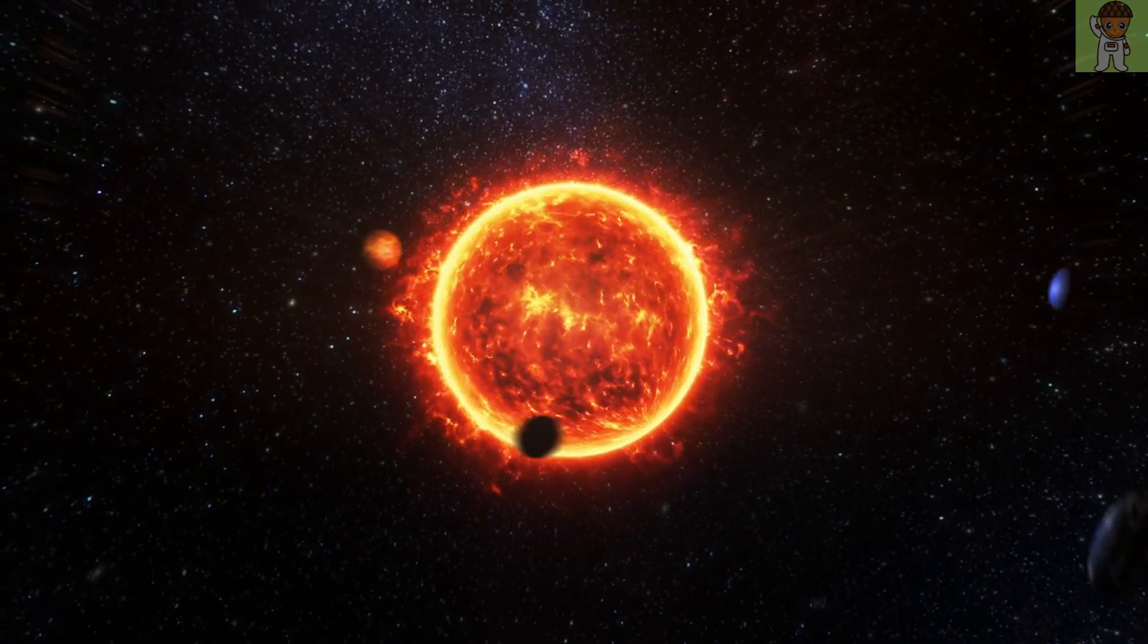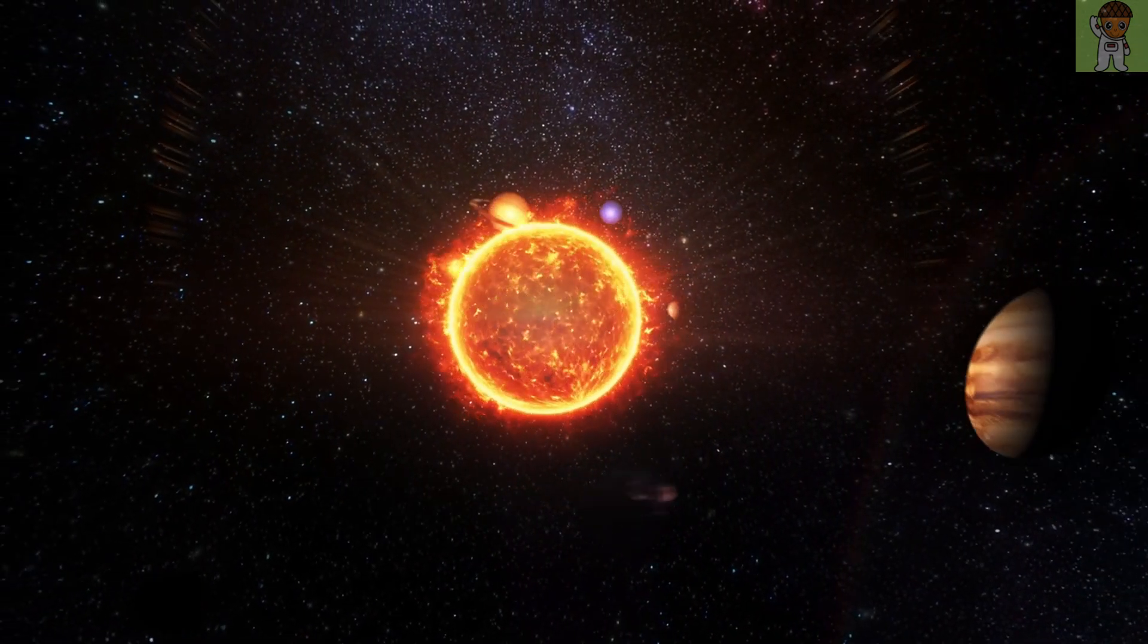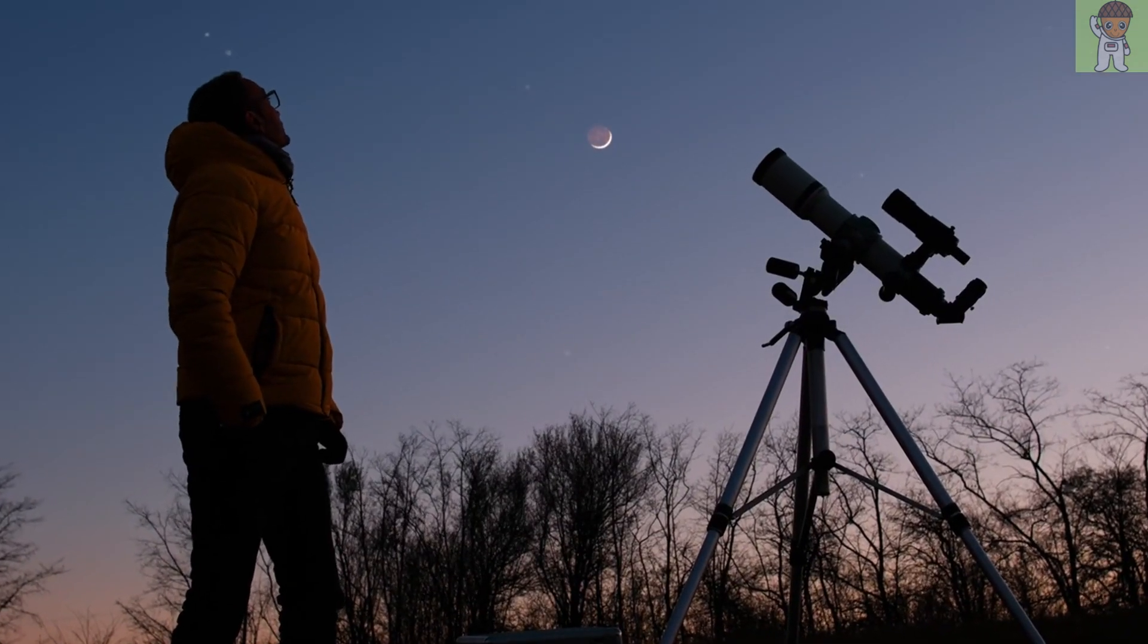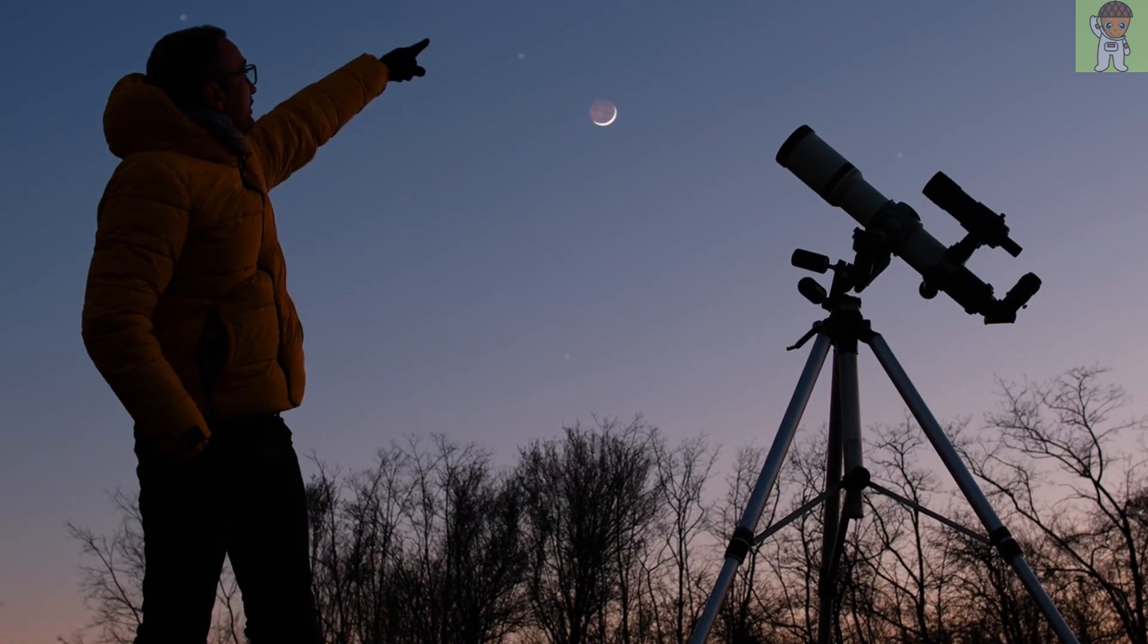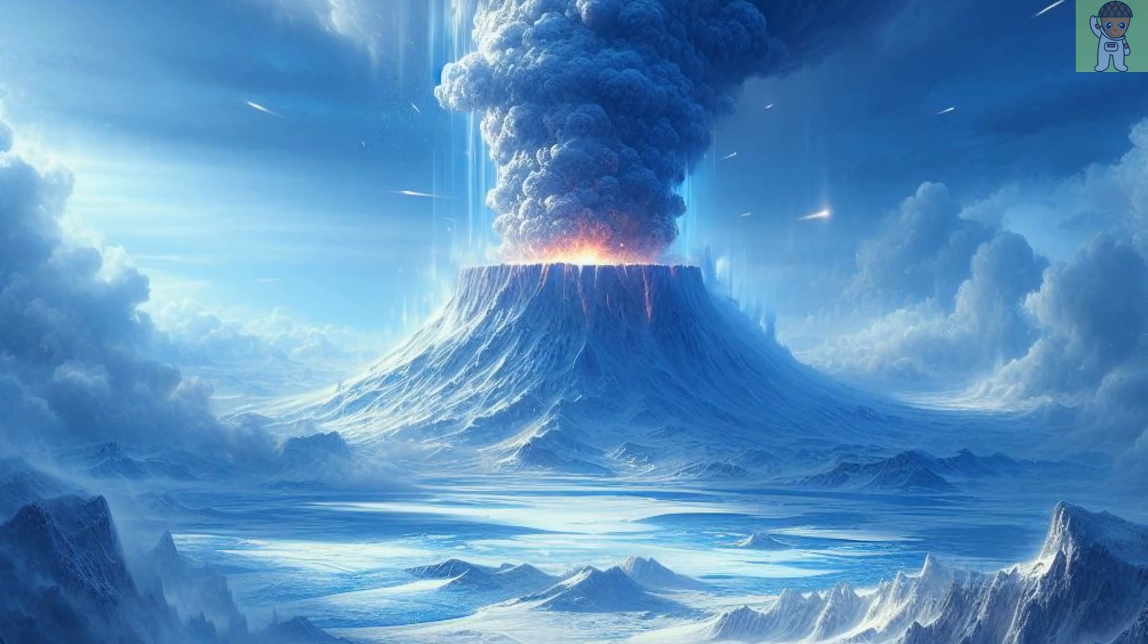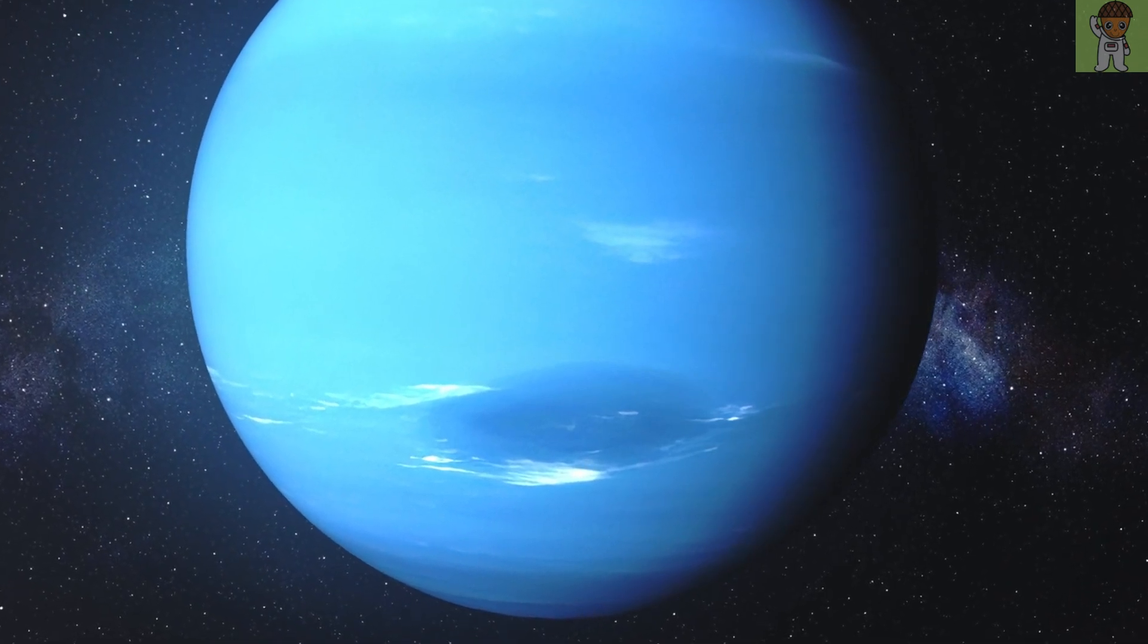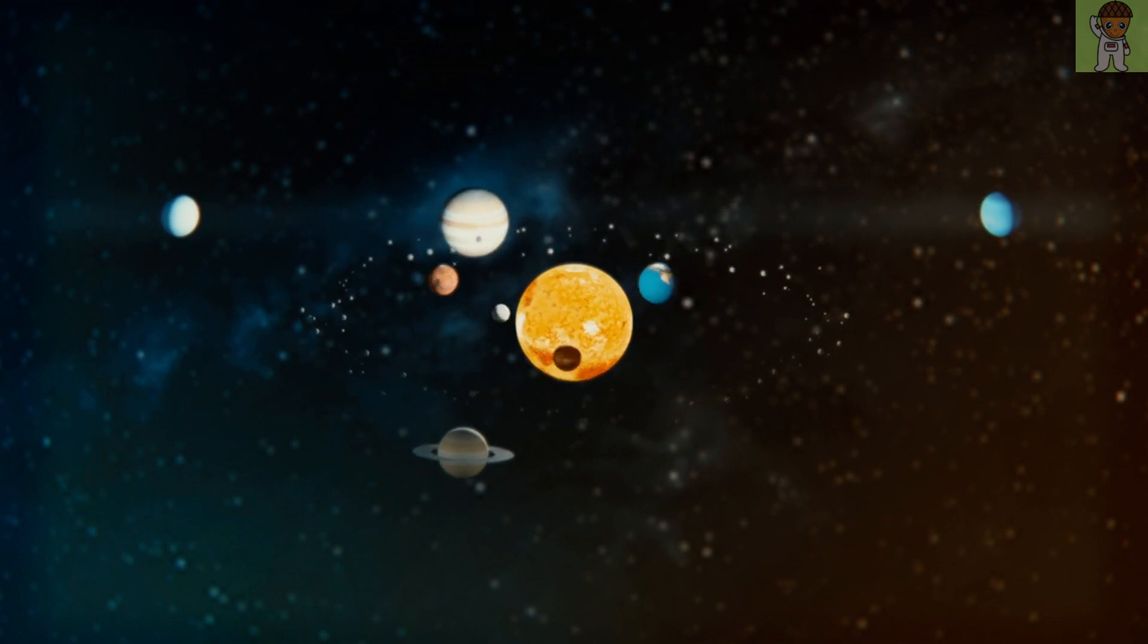Each year unfolds new layers of understanding about the vast complexities of the solar system, and the current year is no exception. Scientists have illuminated our cosmic neighborhood with a series of captivating discoveries, ranging from planets undergoing size changes to the emergence of new moons, from an icy supervolcano to enigmatic celestial spots. Here are the 10 latest and most astonishing revelations about our solar system.